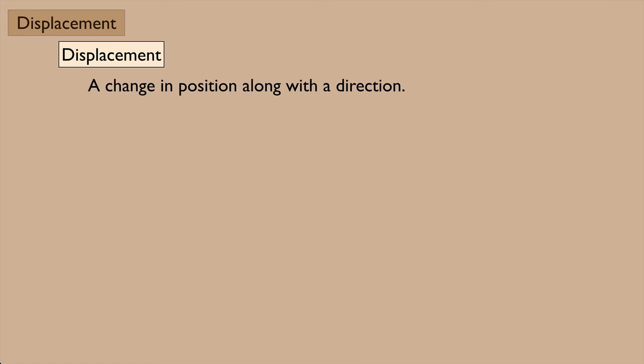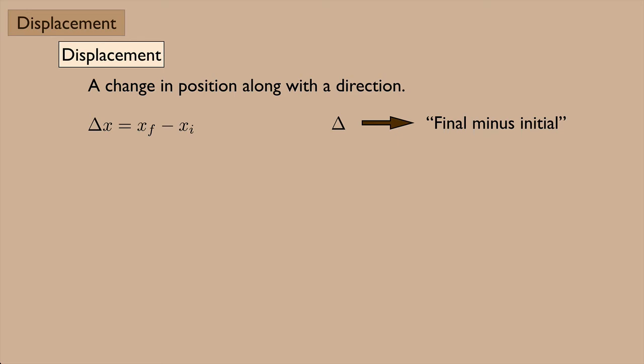Displacement is a change in position along with a direction, and we sometimes write it as a delta x, where that means the x final, the final position, minus x initial, the initial position. And that delta you can think of as final minus initial.